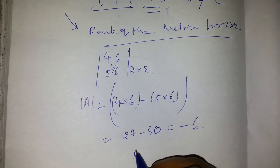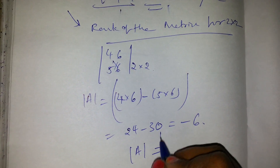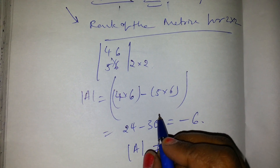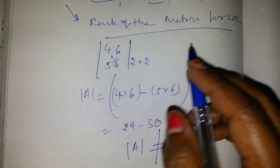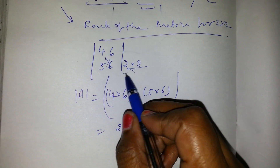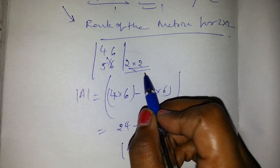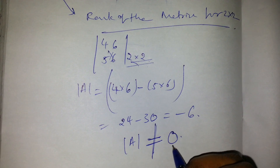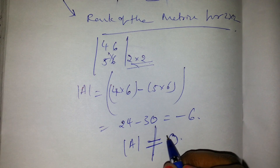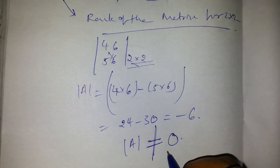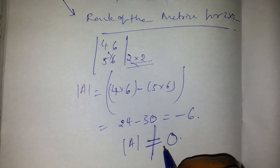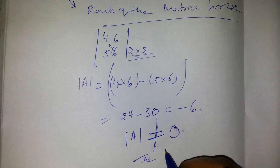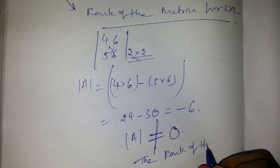Here the determinant is not equal to 0. If the determinant is not equal to 0, then the rank of the matrix is equal to the order of the matrix. The order of the matrix is 2 by 2, so the rank of the matrix is 2.